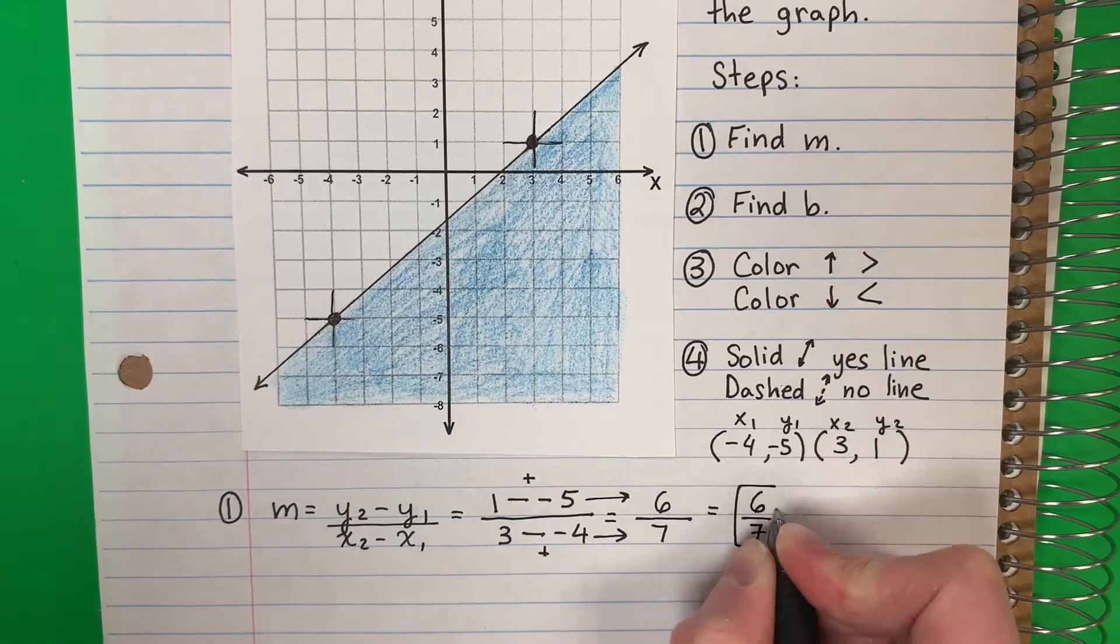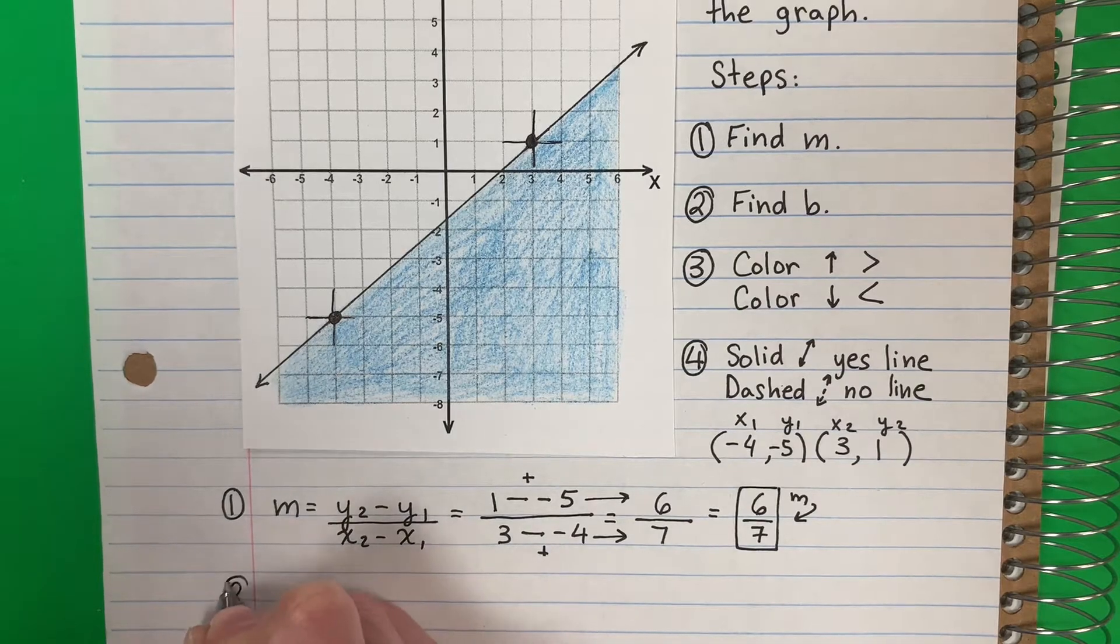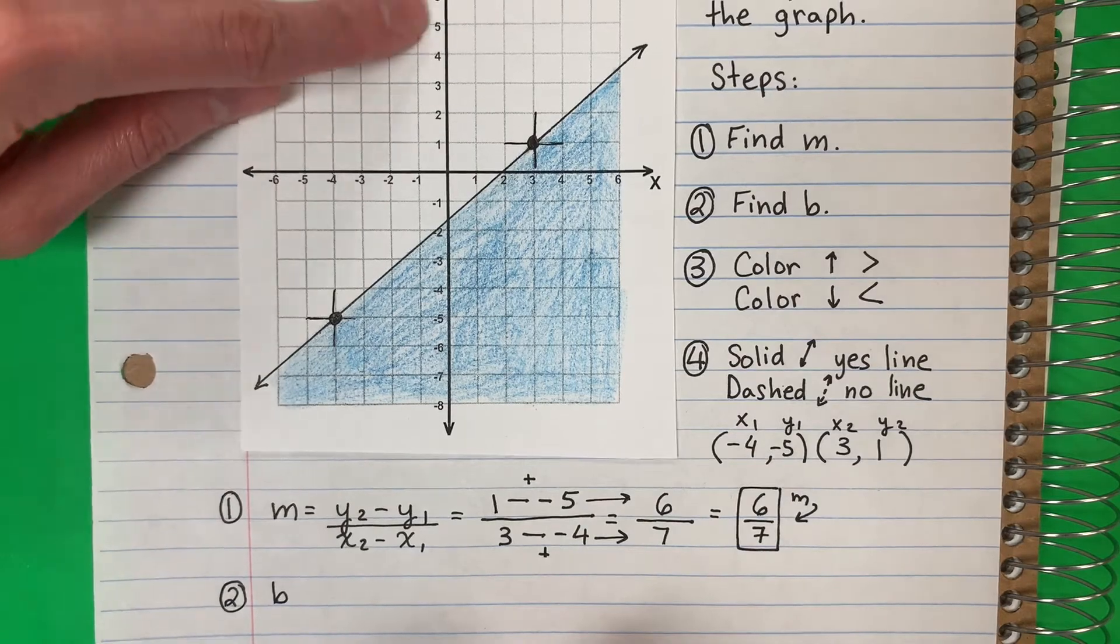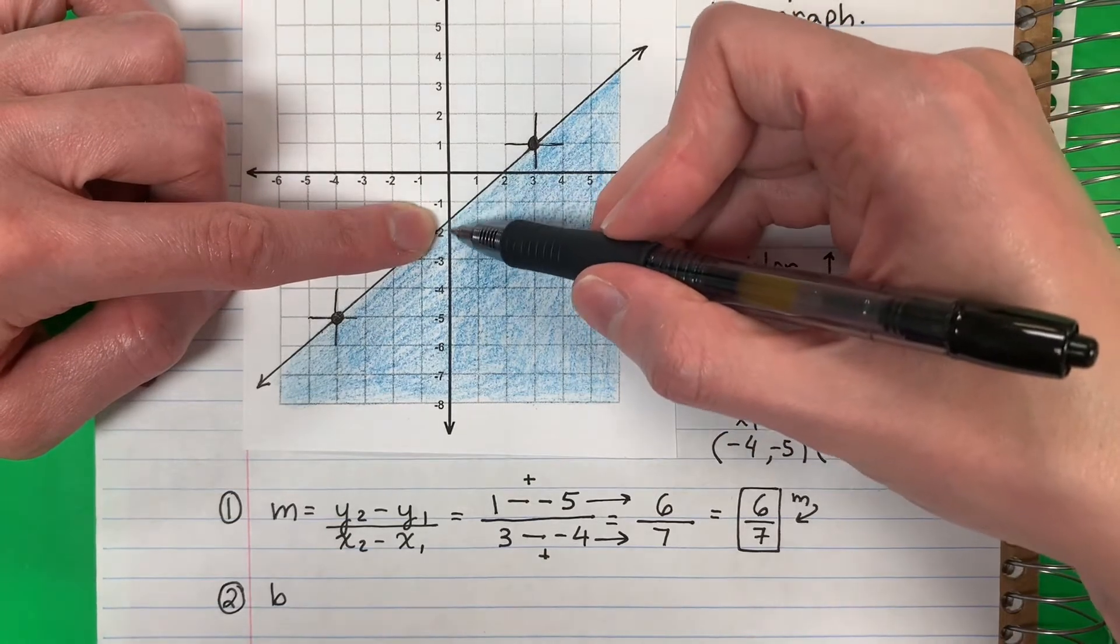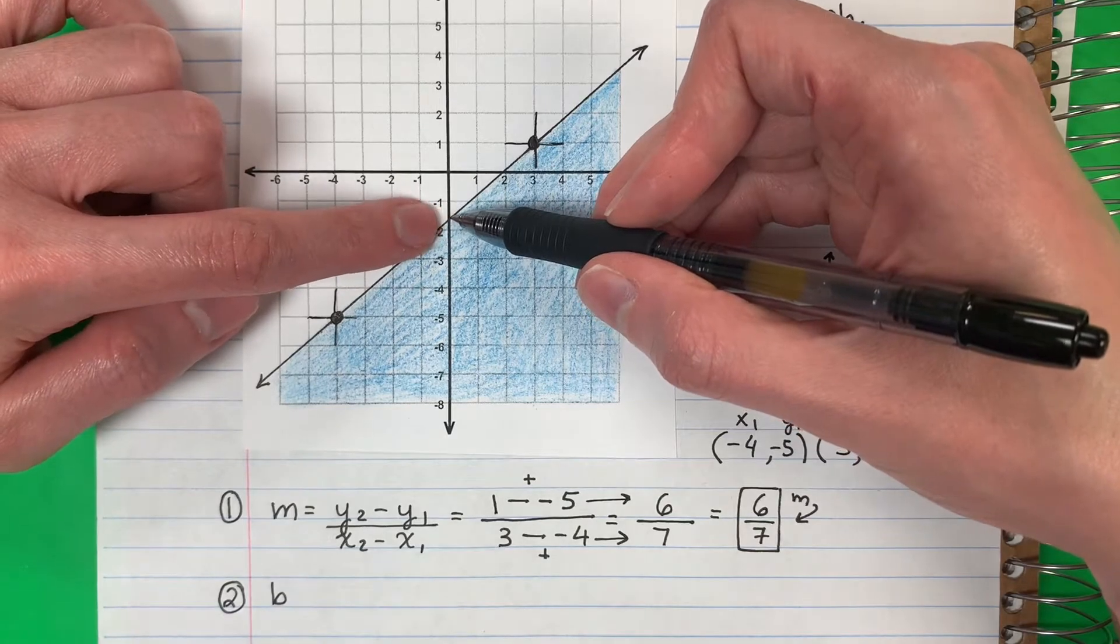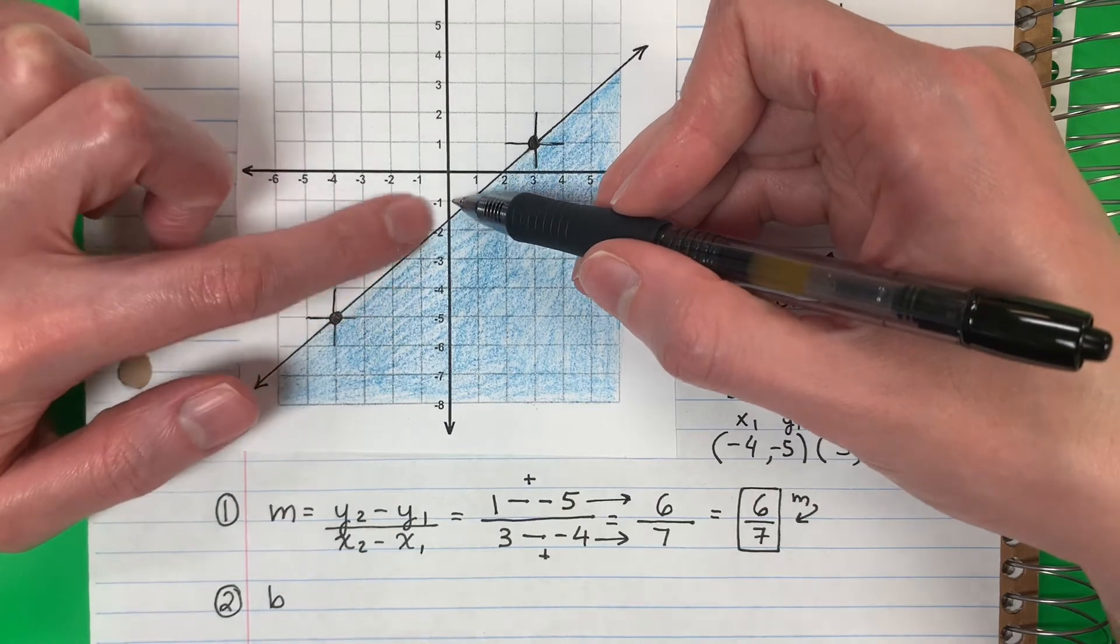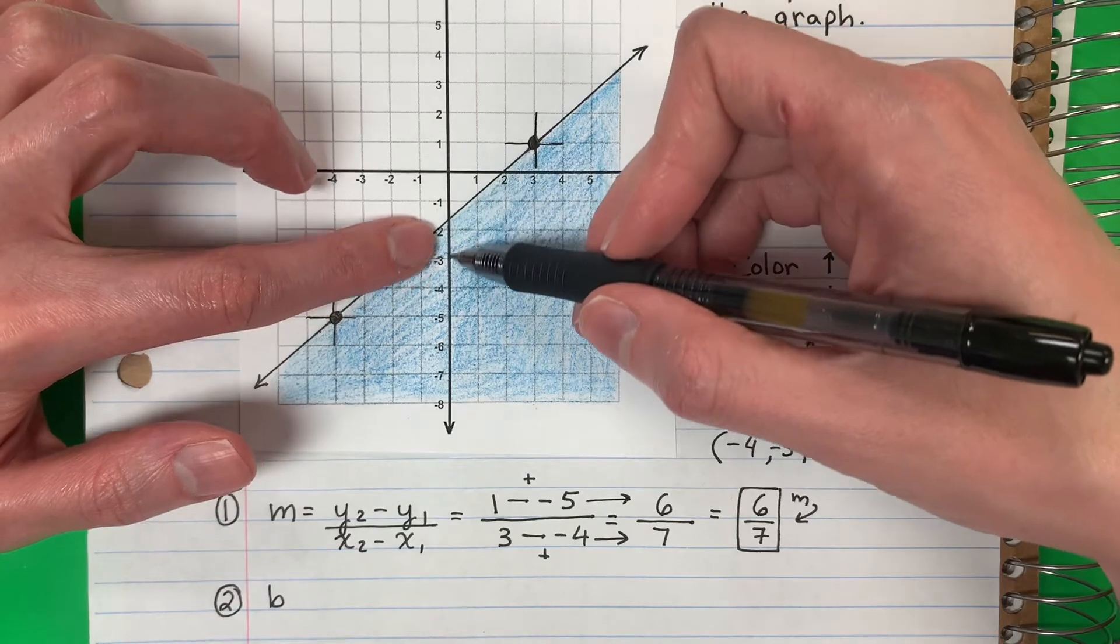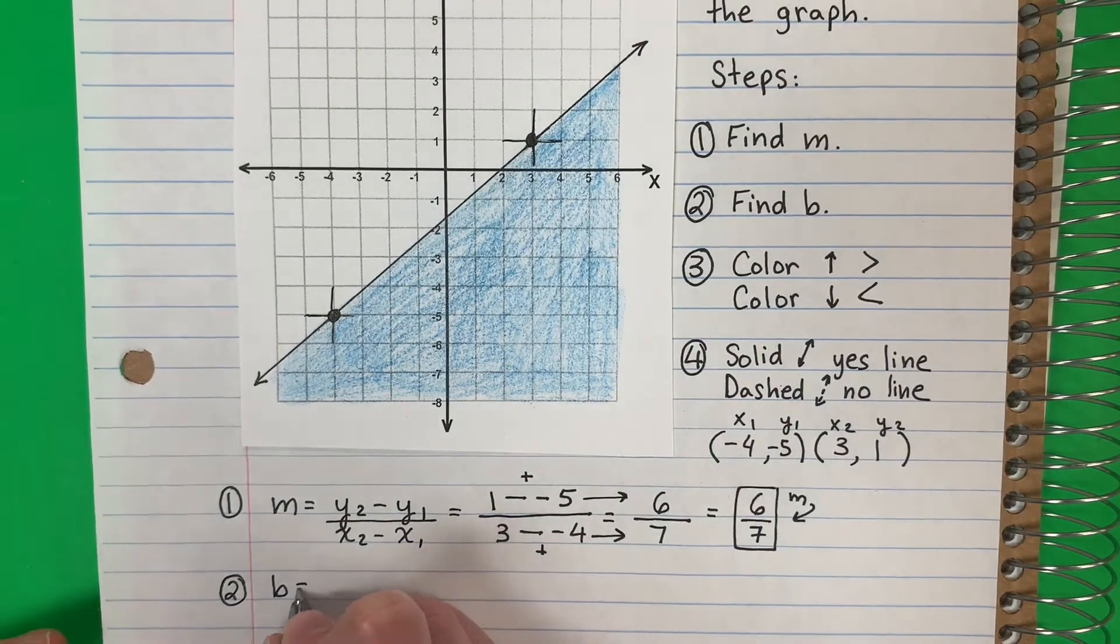Next is my y-intercept b. I need b. Now to find b I need to see where it touches, necesito ver donde toca. Here it touches the y not in a corner, no en una esquina. So I cannot use it like this. I'm gonna need to use my formula, necesito usar mi fórmula, because it doesn't touch in a corner on the y-axis.